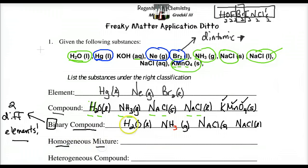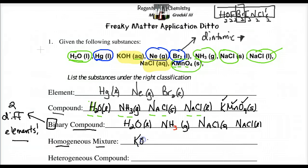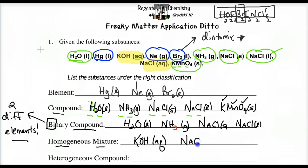Homogeneous mixture should leap at you at this point — look for the aqueous notation. There are two of them: that means a compound mixed with water. We have KOH aqueous — potassium hydroxide with three different elements bonded together — but the key here is the aqueous. If it's a chemical in lab or in class, aqueous tells us it's mixed with, dissolved in water. And of course, NaCl aqueous — table salt mixed with water gives you salt water.